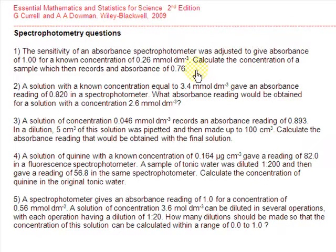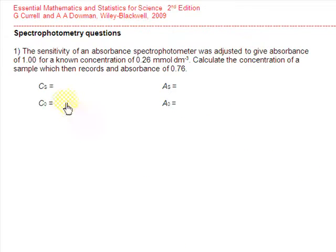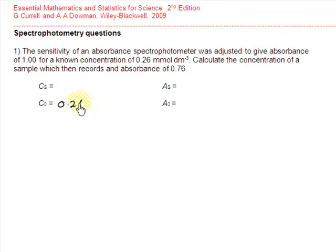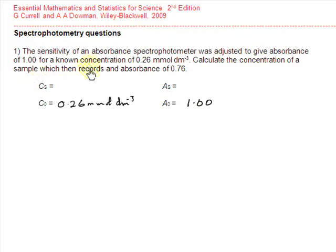We can now work through the answers to these five spectrophotometry questions. In this first question, we're told that a known concentration of 0.26 millimoles per decimetre cubed gives an absorbance of 1.00. So C₀ is 0.26 millimoles per decimetre cubed, giving an absorbance of exactly 1. And what we have to do is calculate the concentration of a sample, our unknown concentration C, that records an absorbance of 0.76.